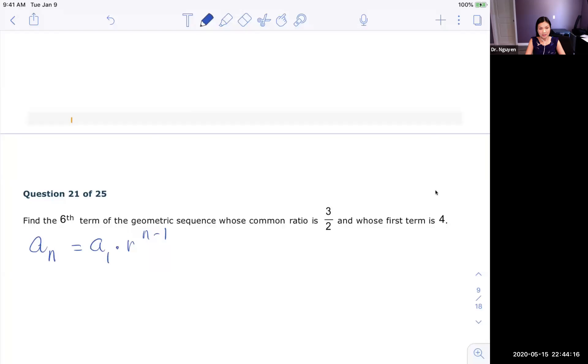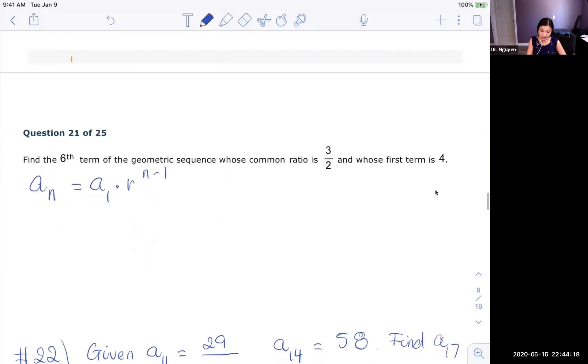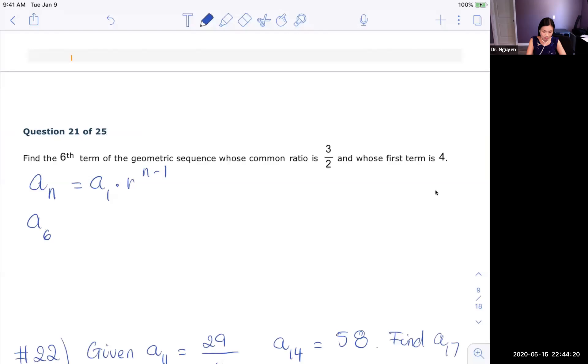Now they ask you to find the sixth term. So they're asking you to find A6. They give you A1, which is 4, and then the R, the common ratio is 3 halves. N minus 1, so 6 minus 1.